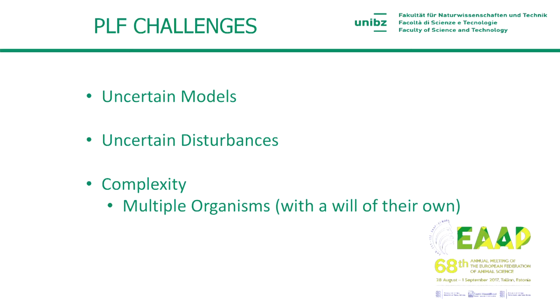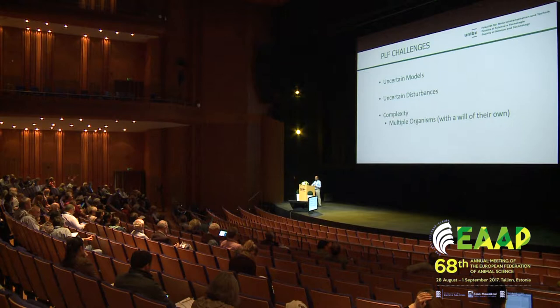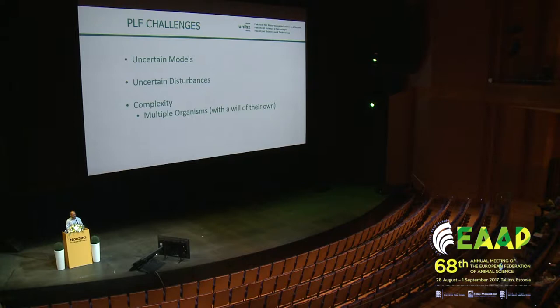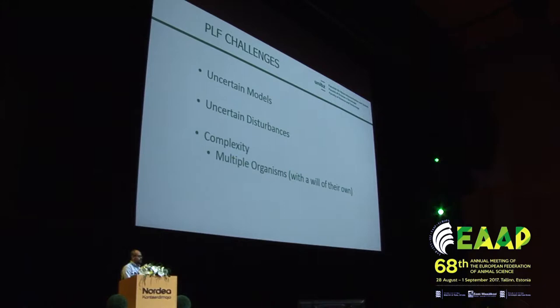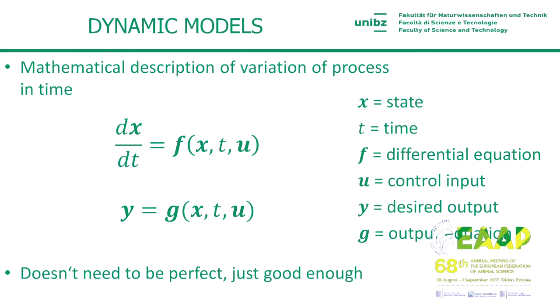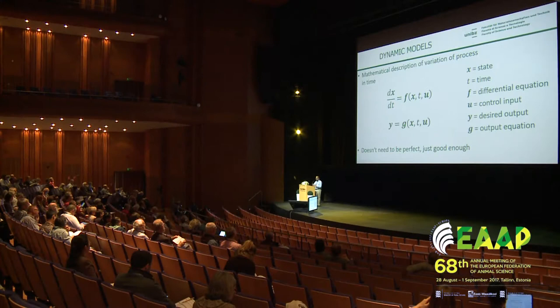Other aspects to think about are uncertain disturbances — for example, a previous speaker mentioned times when you hope to control production but then the power goes out for two days, which represents a disturbance on your ability to produce things. And then there's the complexity of the system. These are all things also faced in field robotics, and so there are existing methods and techniques that can be applied.